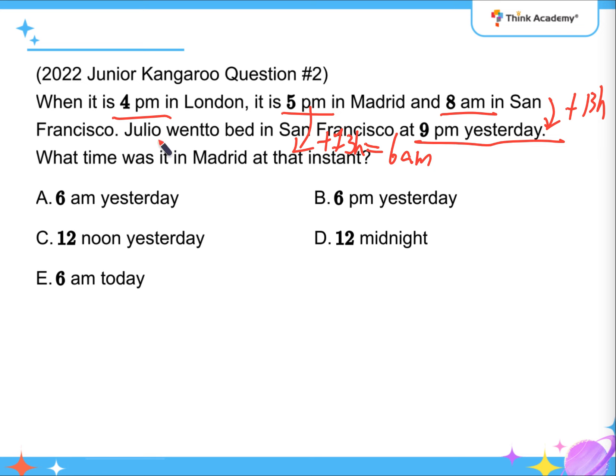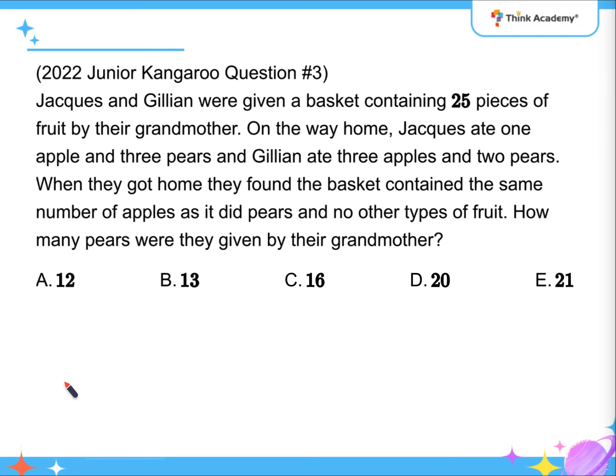So, if Julia went to bed at 9pm yesterday, in Madrid, it is 6am today, because that's on the next day. That's for question 2.